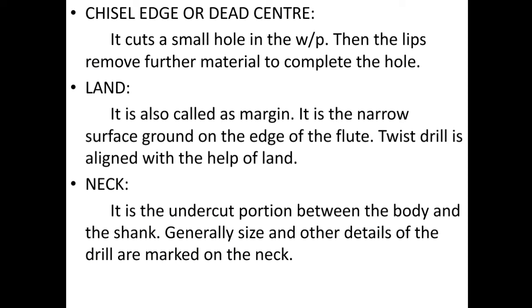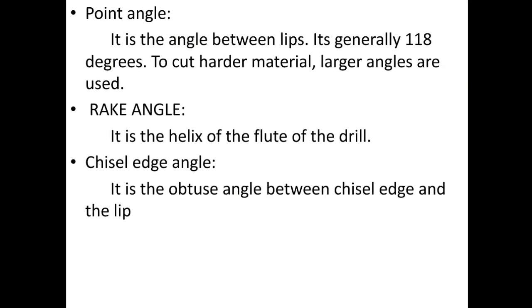Neck: It is the undercut portion between the body and the shank. Generally, the size and other details of the drill are marked on this neck. Point angle: It is the angle between the lips, generally 118 degrees. To cut harder materials, larger angles are used. Rake angle: It is the helix angle of the flute of the drill. Chisel edge angle: It is the obtuse angle between the chisel edge and the lip.